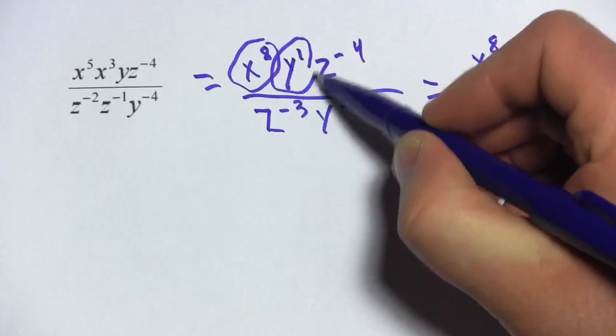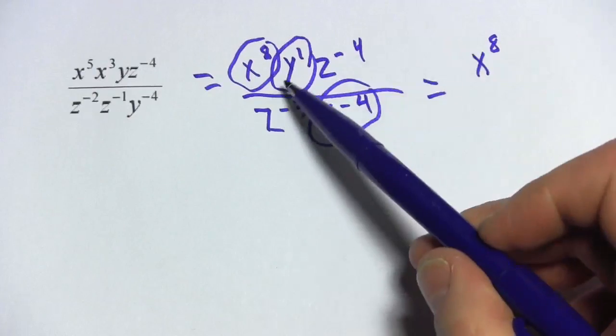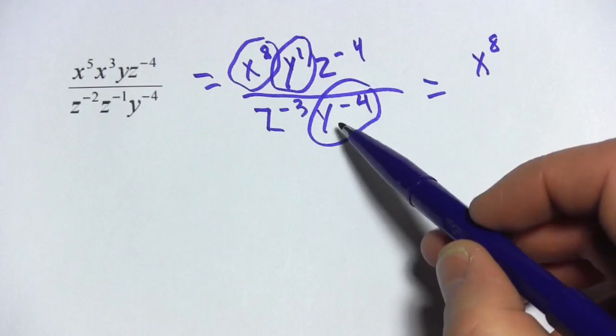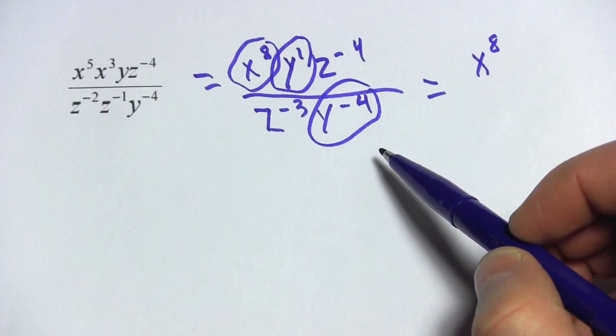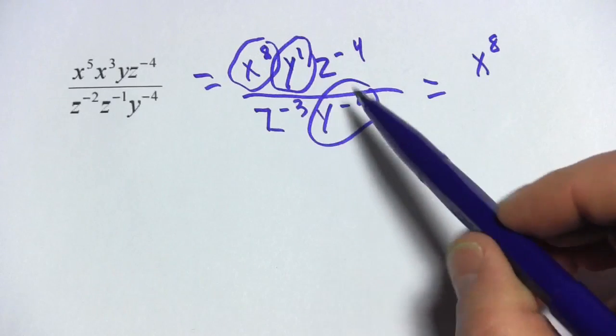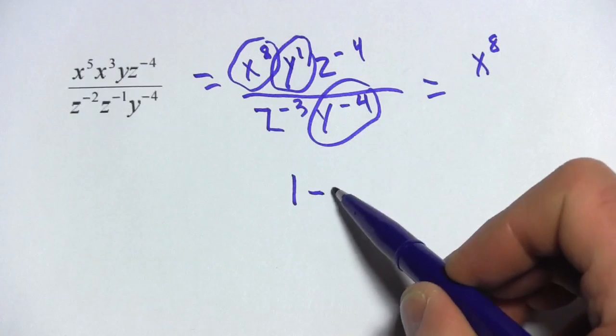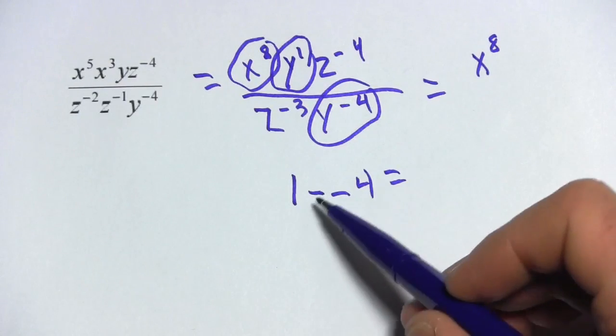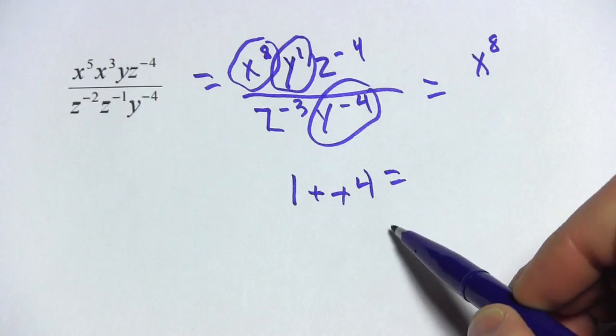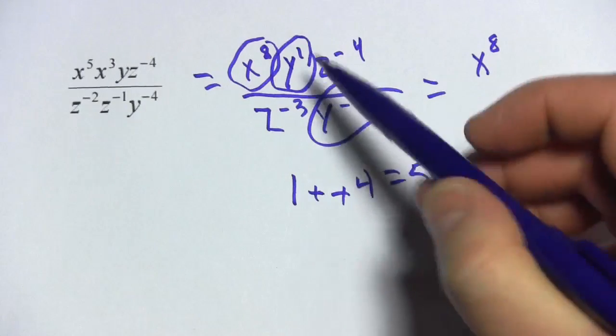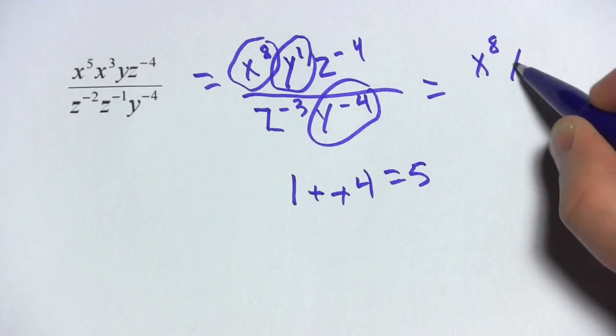Then my next term is the y terms. And I've got y to the first on the top and y to the negative fourth on the bottom. So I'm going to apply my quotient rule. I'm going to subtract the exponents. So this is 1 minus a negative 4. 1 minus a negative 4 is the same as 1 plus 4. So that's 5. So what I get on the top then is y to the fifth.